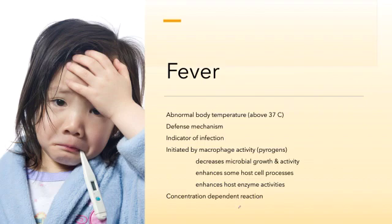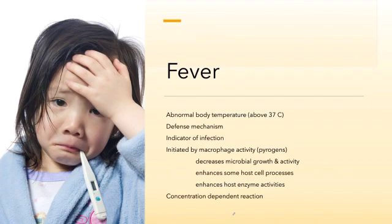Fever is initiated by macrophage activity. Macrophages produce a set of cytokines called pyrogens, which are a group of interleukins in particular — we talked about those ILs. The properties of fever include that it will decrease the ability of microorganismal growth, slowing down the growth of microorganisms, particularly bacteria. It also helps to activate or enhance some of our own host cell processes.